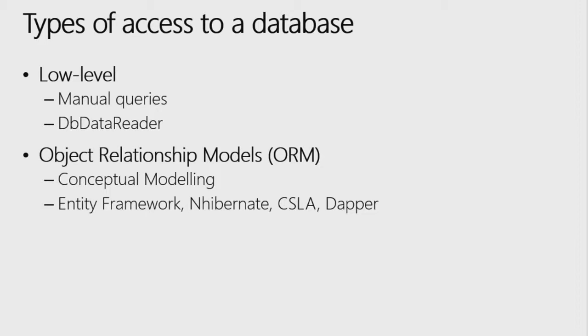The way you talk to a database varies. You can talk to it manually using ADO.NET, which gives you everything — the data reader, the database connection, all the objects you need. You don't see raw ADO.NET as much as you used to. We can wrap those to simplify and increase productivity, or to abstract it away. Those are usually object relational models — ORMs. ORMs are very popular. Microsoft makes one called Entity Framework, but there are certainly others like Hibernate and Dapper.